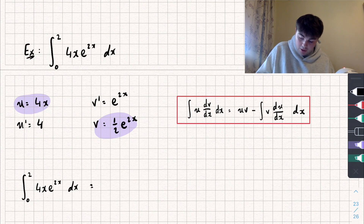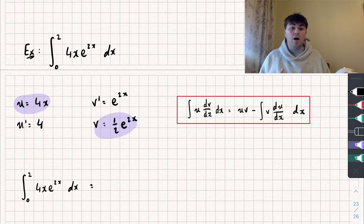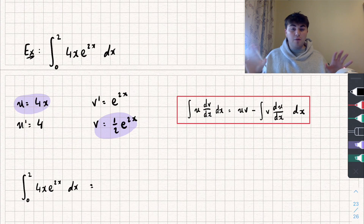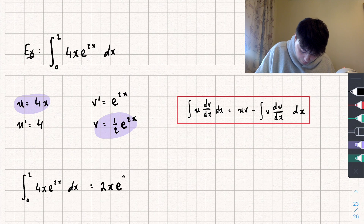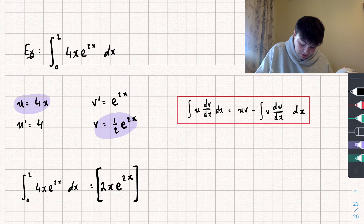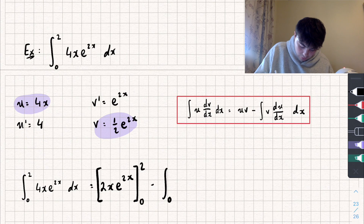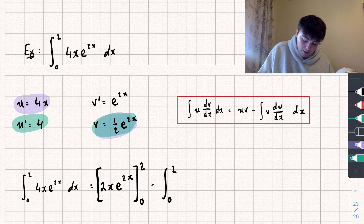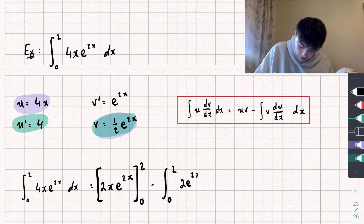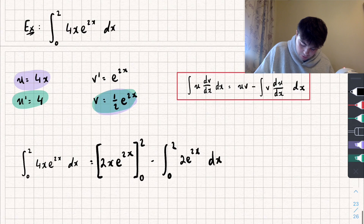Taking the derivative of u gives 4. Integrating v' — the integral of e to the power of 2x — gives one half e to the power of 2x. Using our integration by parts formula, this integral equals uv, which is 4x times one half e to the power of 2x — the four and the half multiply together to give 2x e to the power of 2x — evaluated between the limits zero and two, subtract the integral between zero and two of v times u', which is 2 e to the 2x with respect to x.